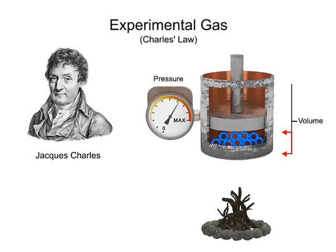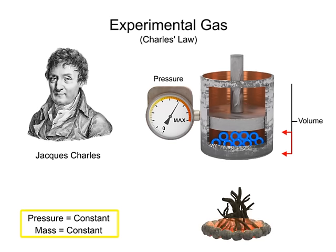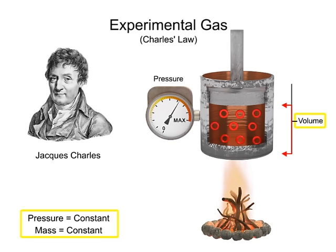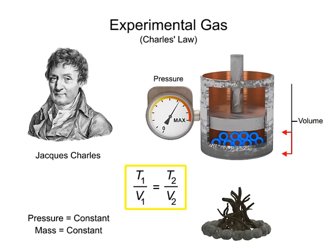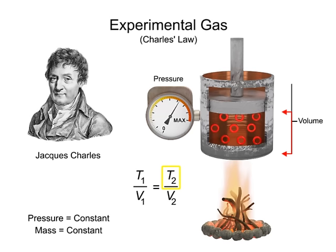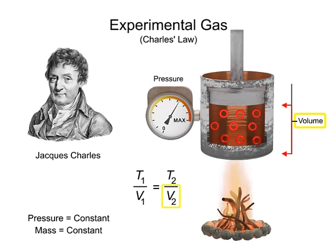It states that if the pressure of a gas is constant and its temperature is raised, the volume will also be raised by the same ratio. Additionally, the inverse is true: if the pressure of a gas is constant and the temperature is lowered, the volume will also lower. Charles' Law can be expressed mathematically as the ratio of the temperature at state 1 to the volume at state 1 is equal to the ratio of the temperature at state 2 to the volume at state 2. This law is true as long as the pressure and mass remain constant.